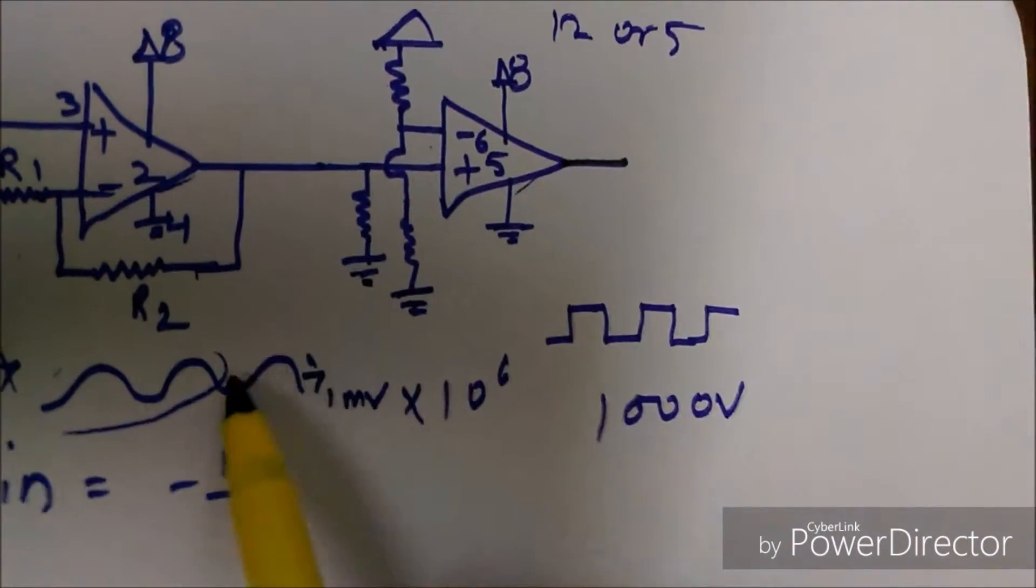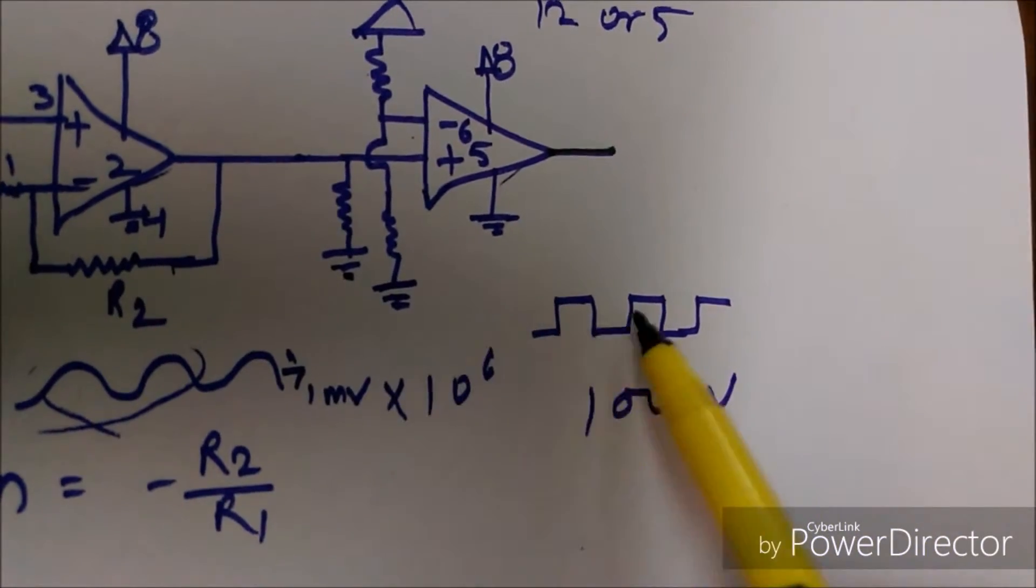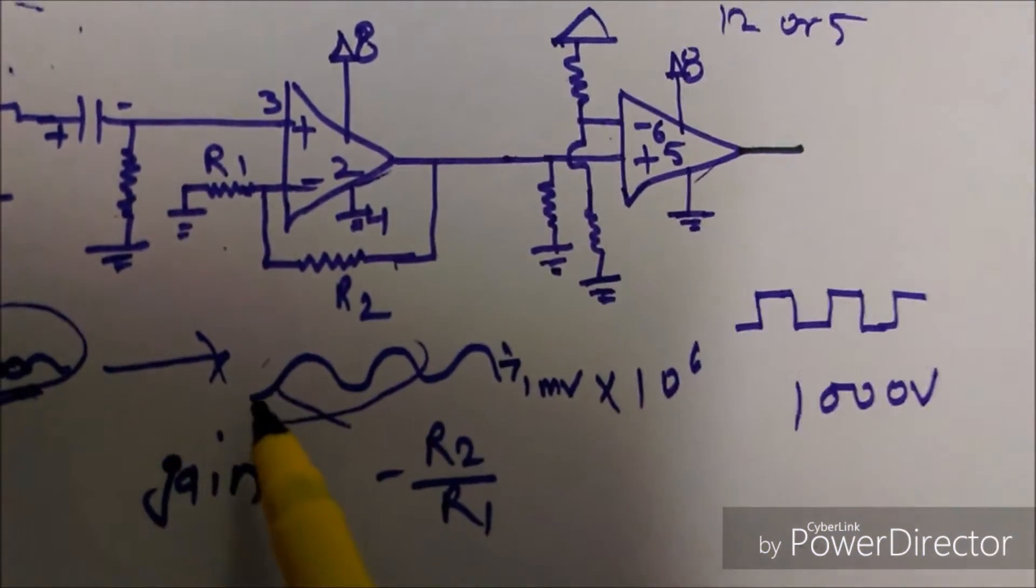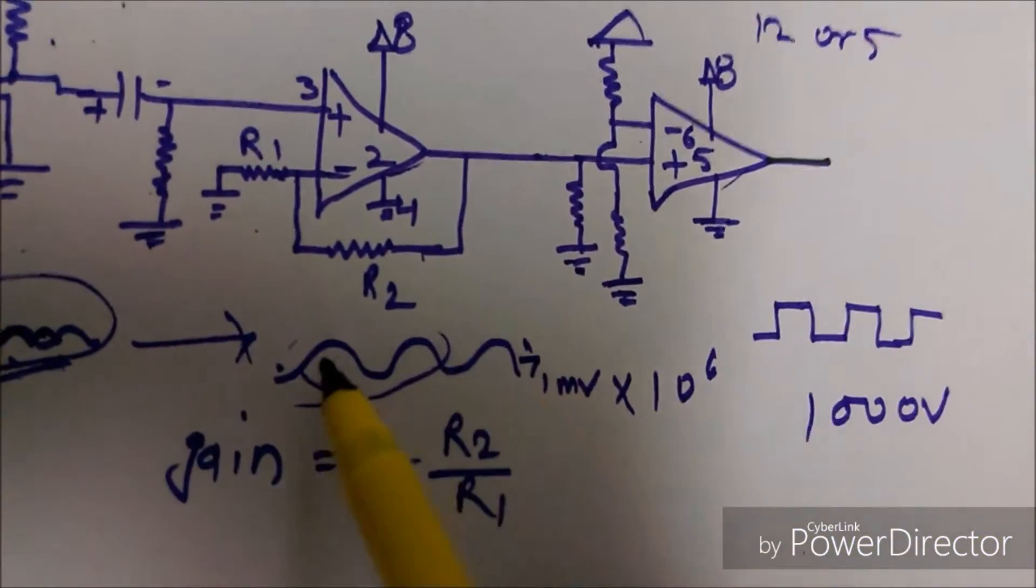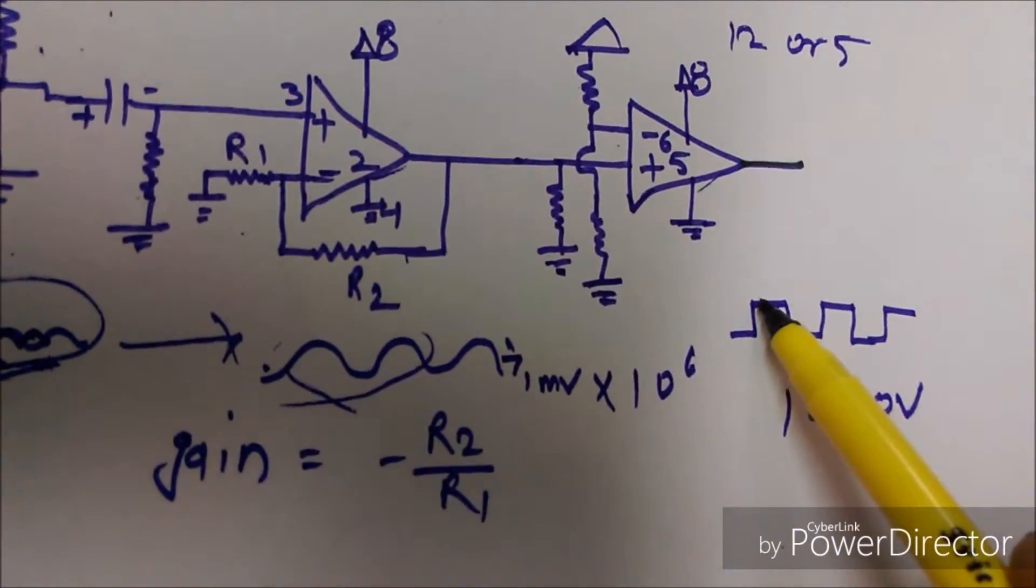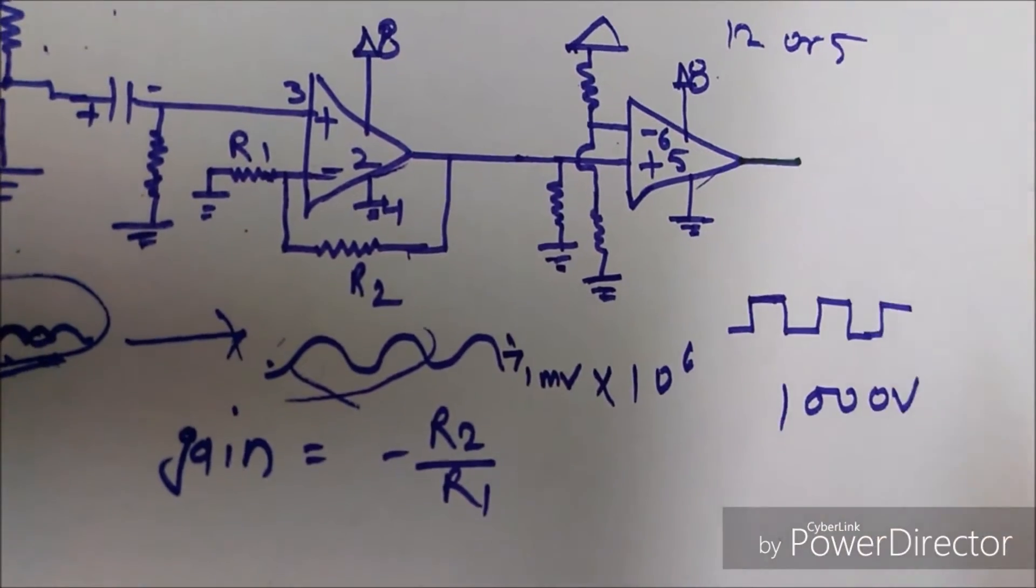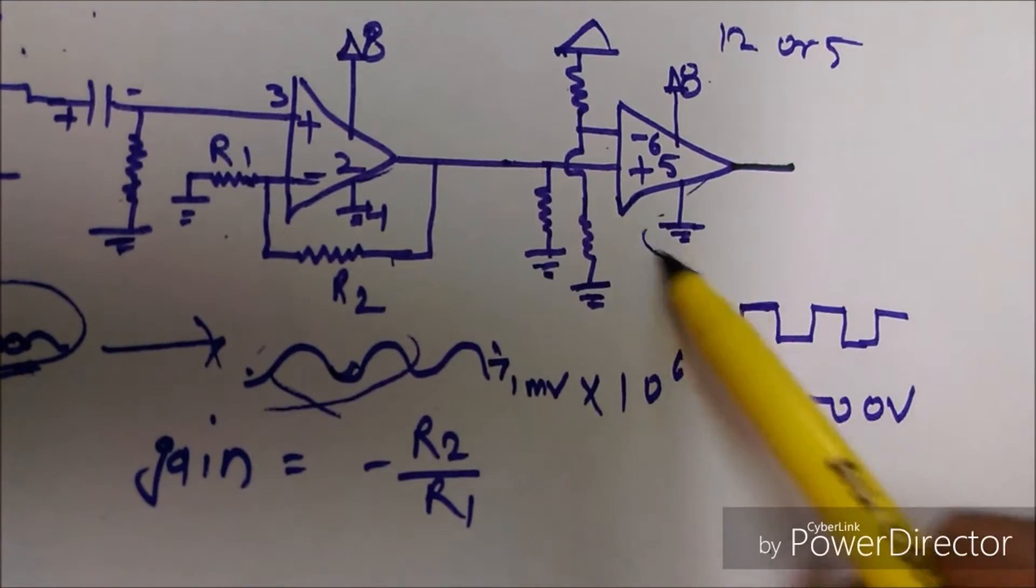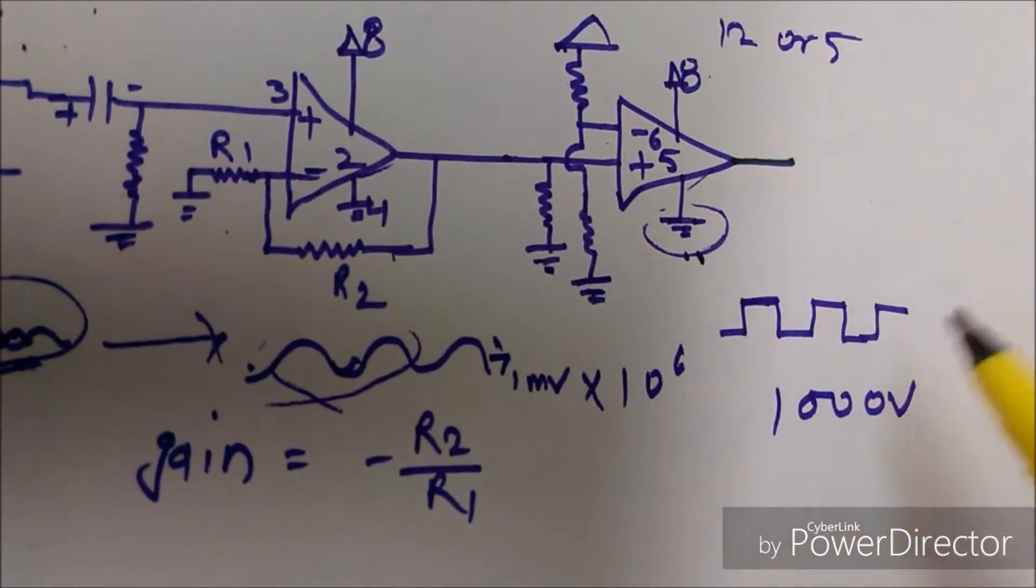So it will saturate this signal in this way. As this pulse comes, it will saturate to maximum 5 volts. When it comes negative, and the second supply is ground, so its output will be zero.